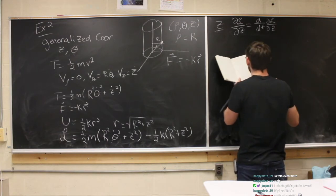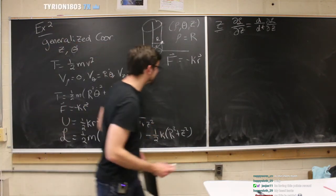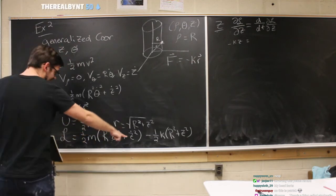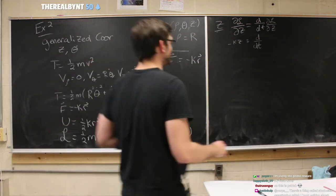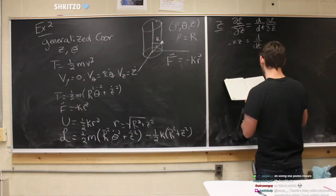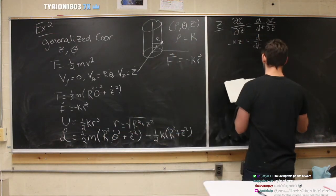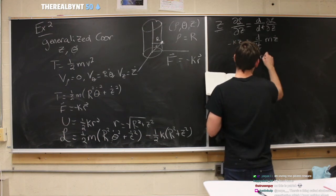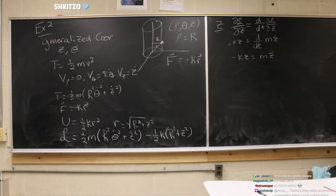Taking the derivative of the Lagrangian with respect to z gives us minus kz. Taking the derivative of the Lagrangian with respect to z-dot gives us m times z-dot, and then taking the time derivative of that gives m times z-double-dot. So our equation of motion is negative kz equals m times z-double-dot. That makes perfect sense — Hooke's law equals mass times acceleration, exactly what you'd expect.